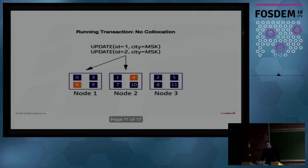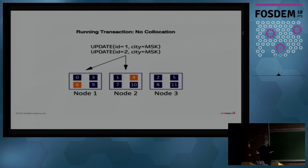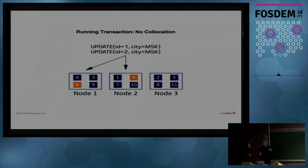One of the things that Ignite allows you to do is co-locate data so you can run queries together. A great example: think back five or six years ago to the hurricane that hit New York. If we co-locate people that live in a city with the city itself on a particular node, sending out a weather alert is very easy because we know exactly where all the data are. Another example: doing debit and credit across two bank accounts, taking from one account and adding to another.